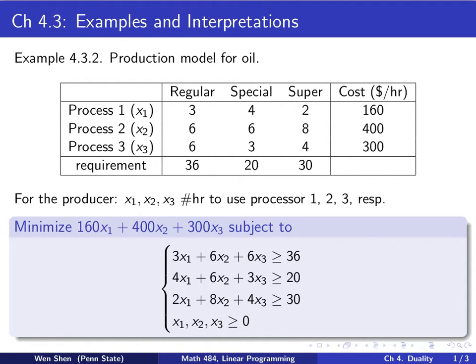Now let's look at the problem from the producer's viewpoint. Let's define three variables, x1, x2, and x3. These will be number of hours, the unit of time, to use processors 1, 2, and 3, respectively. That's why I put x1, x2, x3 in the corresponding place. The objective for the producer is to minimize your cost, and at the same time, meet the basic requirement.